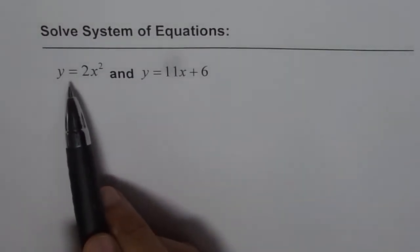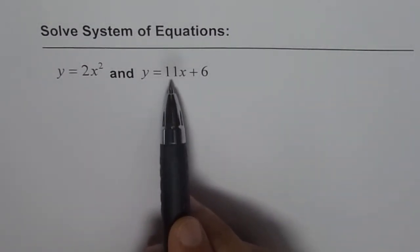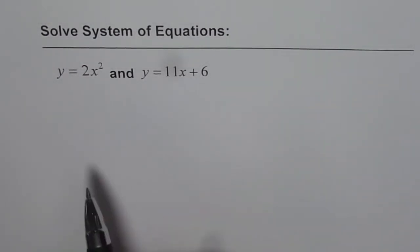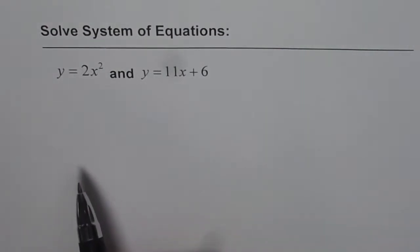So the first equation is y equals to 2x squared, the second one is y equals to 11x plus 6. Now here we have a quadratic equation and a linear equation.